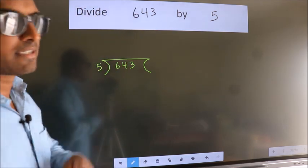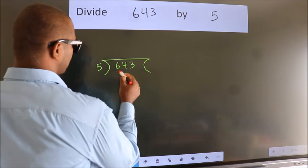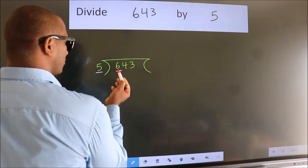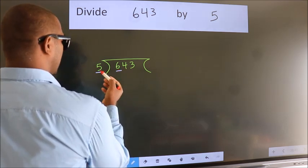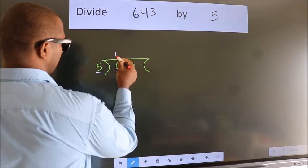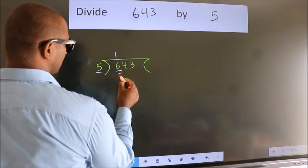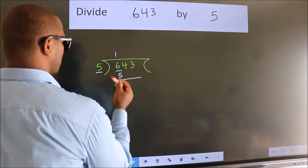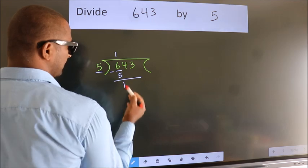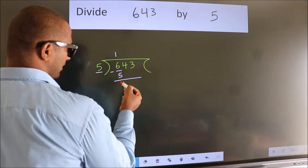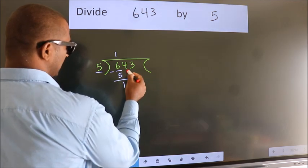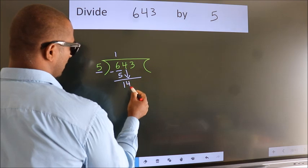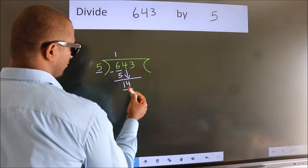Next, here we have 6 and here 5. A number close to 6 in the 5 times table is 5 once, which is 5. Now we should subtract — we get 1. After this, bring down the beside number. So 4 down, giving us 14.